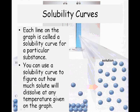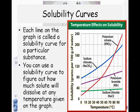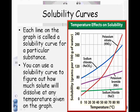Now, solubility curves — you've seen these before in graphing, and you've got to know how to read these and answer questions. Each line on the graph is called a solubility curve for a particular substance. The blue line is for sodium chlorate, red line is for potassium nitrate, purple is for potassium bromide, and green is sodium chloride.